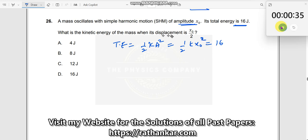What is the kinetic energy of the mass when its displacement is X0 by 2? We know that kinetic energy plus potential energy is equal to total energy which is equal to 16. So he is asking to find out what is the value of kinetic energy which would be 16 minus potential energy which would be 16 minus half k X square.